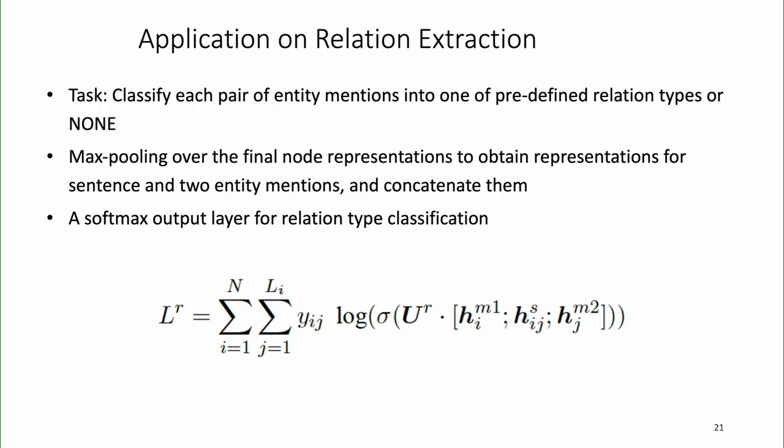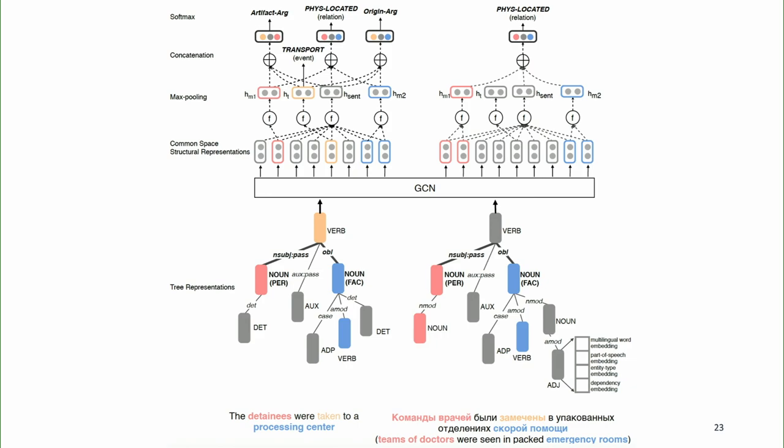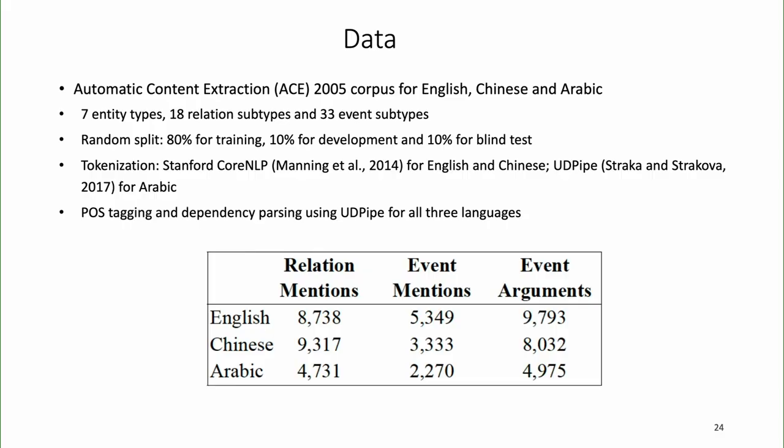We train the model from English and apply it to other languages. Similarly for events, we consider the trigger and the entity as a pair and classify that into one of the predefined event argument roles, with features from the trigger node, entity node, and whole sentence. The English training data is already labeled as a movement event and located relation, while the Russian sentence has no label but shares a common GCN representation. We experimented on English, Chinese, and Arabic since we only have human ground-truth annotation for relations and events in those languages.